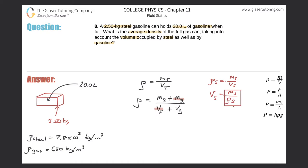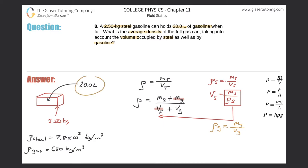Similarly, I can do the same for gasoline. The density of gas equals the mass of the gasoline divided by the volume of the gasoline. In this case I'm after the mass, since they told me the volume. Solving for mass of gasoline: it's simply the density of the gasoline multiplied by the volume of the gasoline. I can now substitute this into my equation.